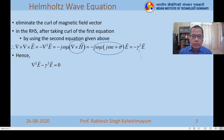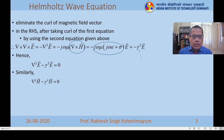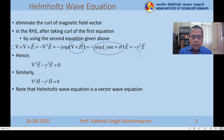Similarly, we can take the curl of the second equation and substitute the first equation to get the wave equation for the magnetic field: Laplacian of H minus gamma squared H equals zero. Since electric field and magnetic field are vectors, this Laplacian will operate component-wise on each component Ex, Ey, Ez of the electric field vector.